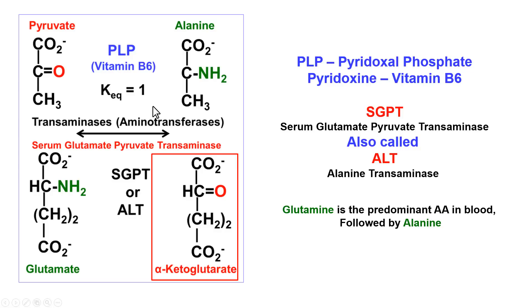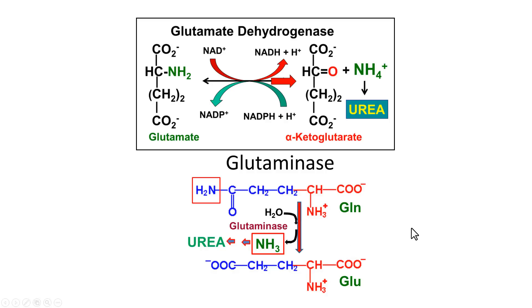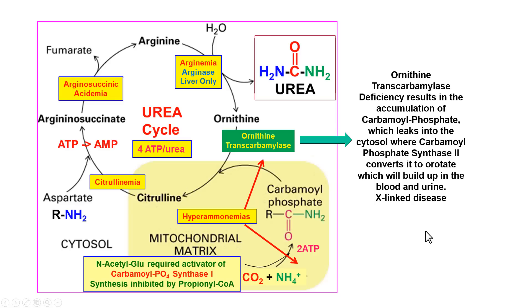This reaction can go back and forth — it has an equilibrium of one. If you have lots of alanine it goes left; lots of glutamate, it goes right. Glutamate dehydrogenase releases ammonia from glutamate so it can be used to make urea. This reaction normally only goes to the right; the byproduct is alpha-ketoglutarate, which enters the TCA cycle, using NAD. Glutaminase acts on glutamine — the predominant amino acid in blood, carrying two amino groups — to release ammonia for urea synthesis.